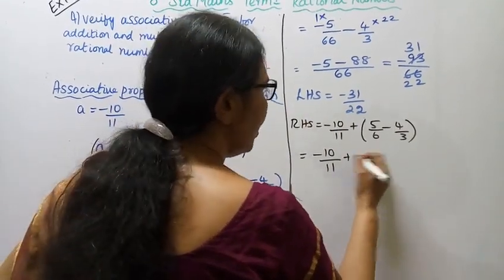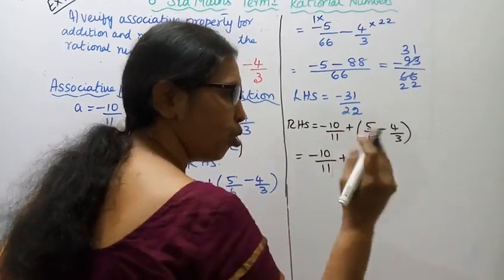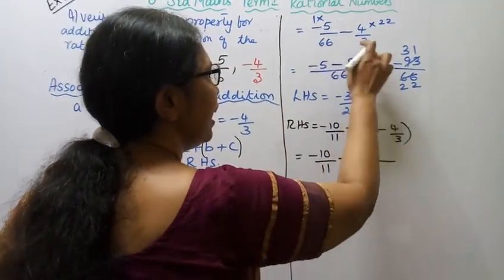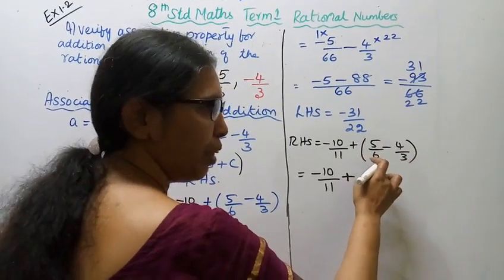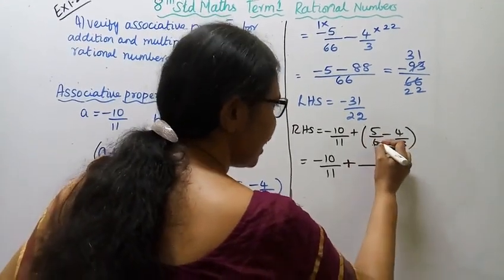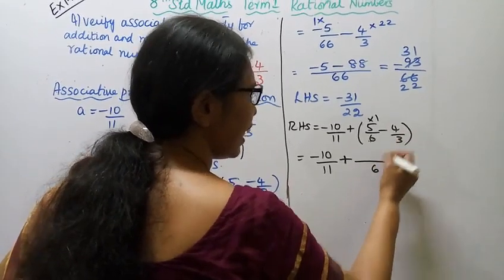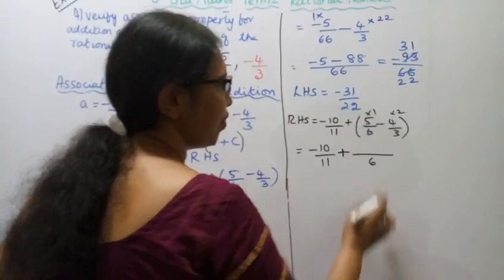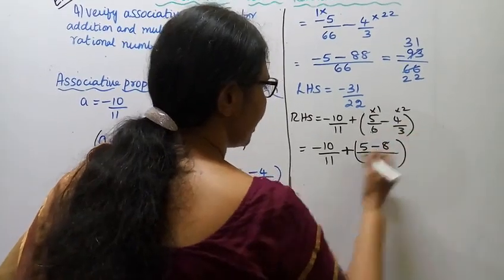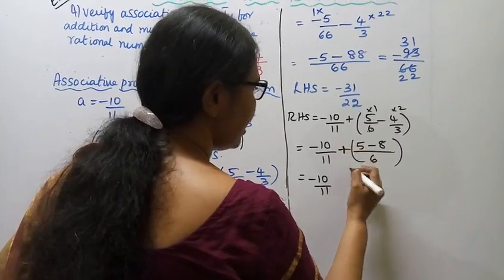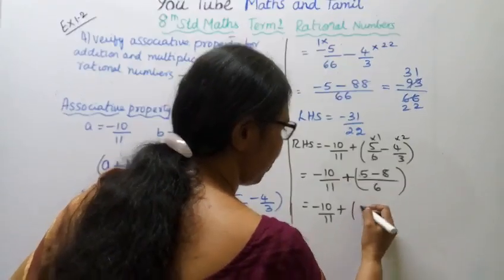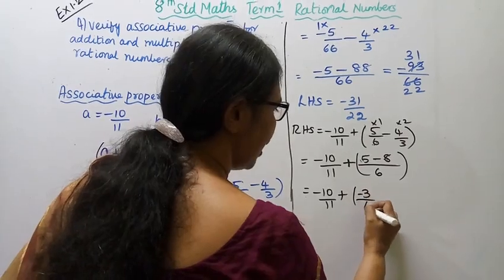LCM of 6 and 3 is 6. 2 times 3 is 6, 1 times 6 is 6. So: 1 times 5 is 5, 2 times 4 is 8, minus 8. Plus minus is subtract: 5 minus 8 is minus 3, greater number 8, so minus 3 by 6. Cancel by 3: minus 1 by 2.